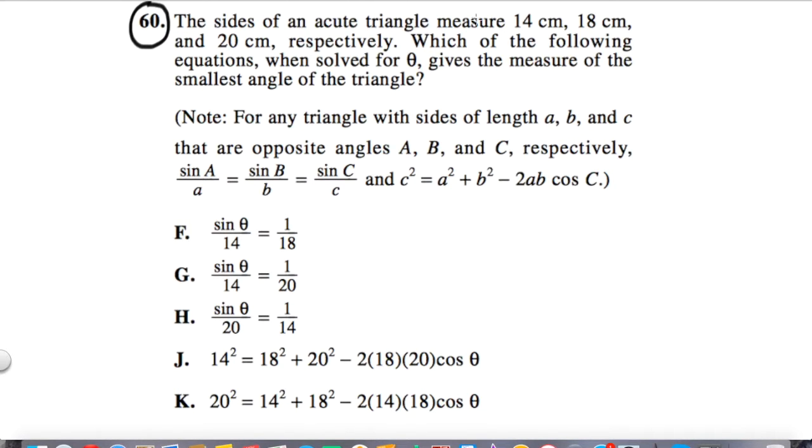The sides of an acute triangle measure 14, 18, and 20, respectively, which of the following equations when solved for theta, always scary in and of itself, gives the measure of the smallest angle of the triangle.